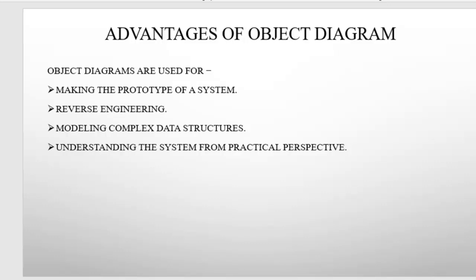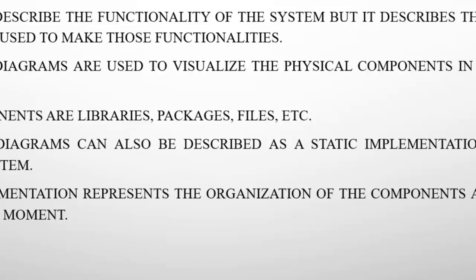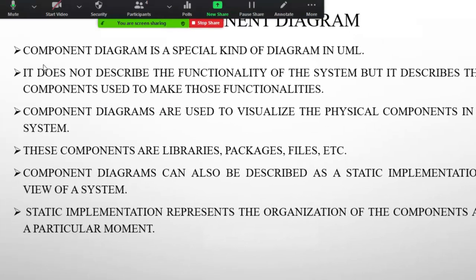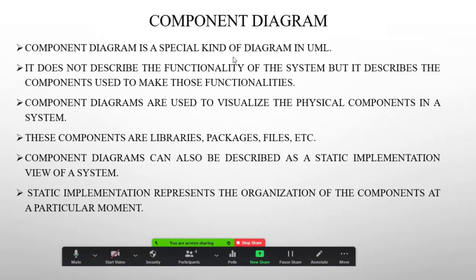Next we are going to discuss the component diagram. What is basically a component diagram? A component diagram is a special kind of diagram in UML. It does not describe the functionality of the system but it describes the components used to make those functionalities.